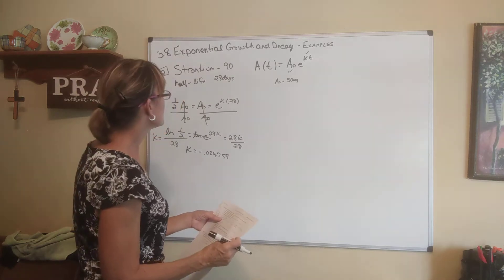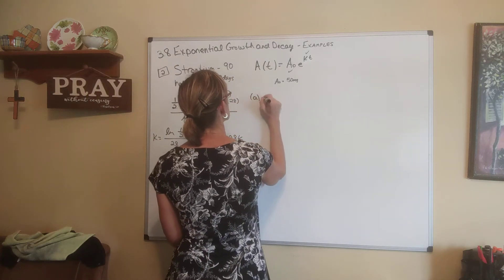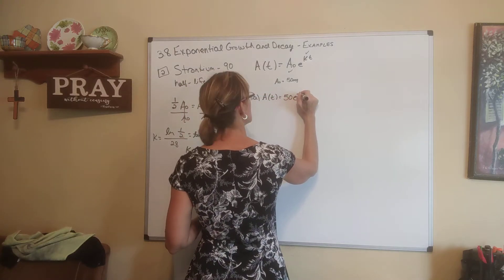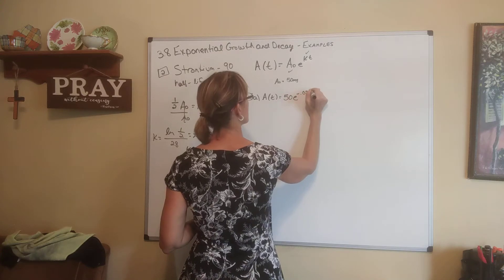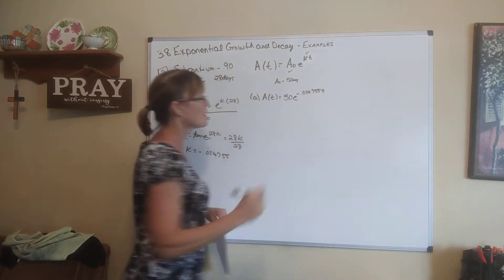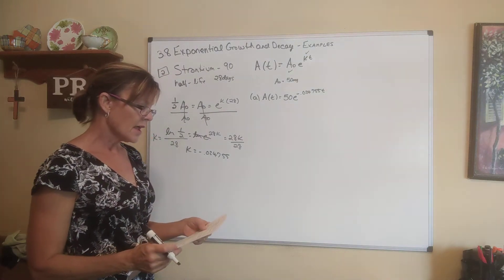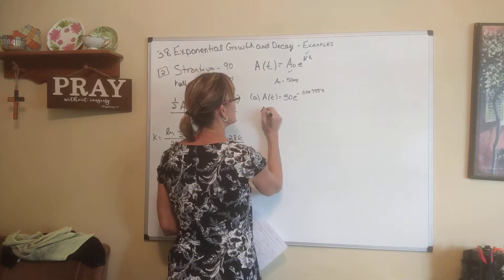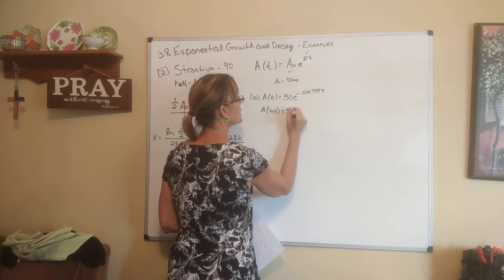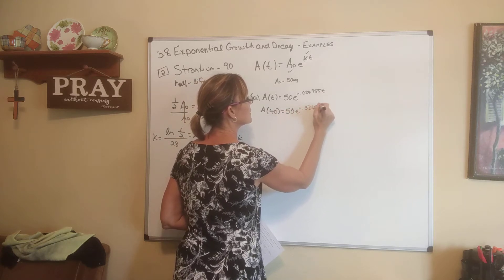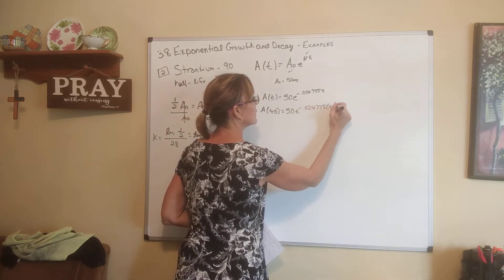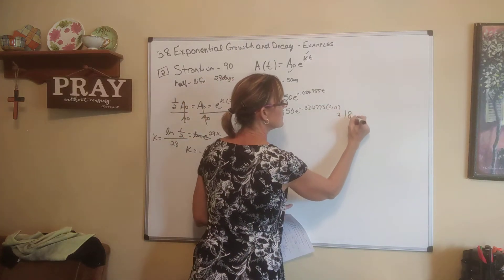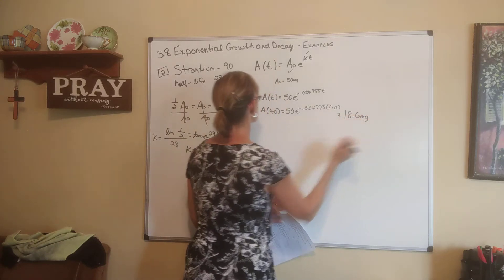So for part a, the expression A(t) is: 50 e to the negative 0.024755t. Then part b says find the mass remaining after 40 days. After 40 days, we take A(40) and plug that in. What we get is 18.6 milligrams. That's all you do for part b.